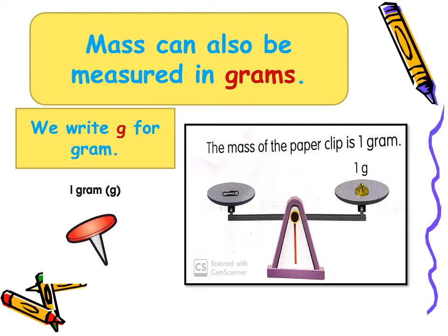Mass can also be measured in grams. Look at the balance. The mass of the paper clip is one gram. We write g for gram, so one g means one gram.